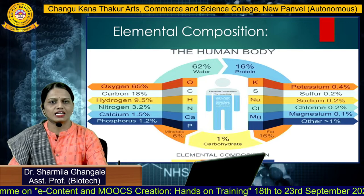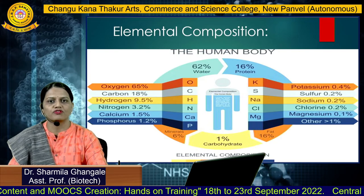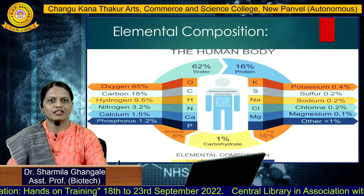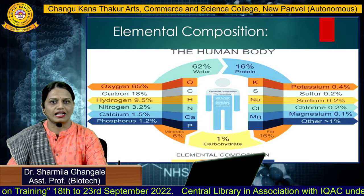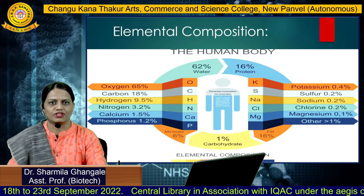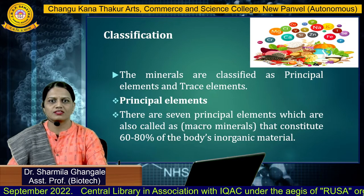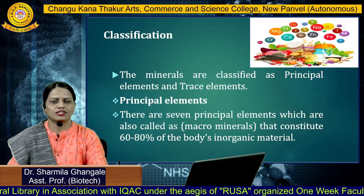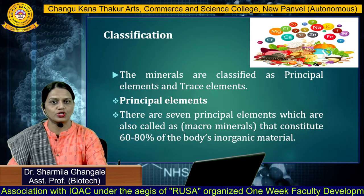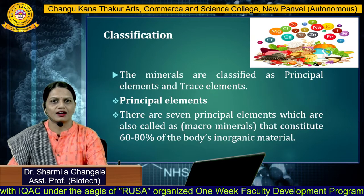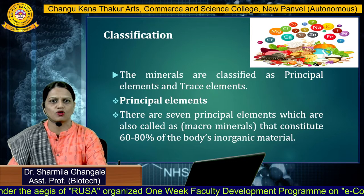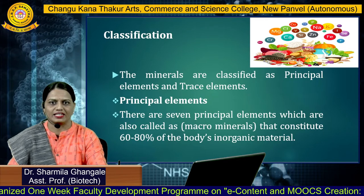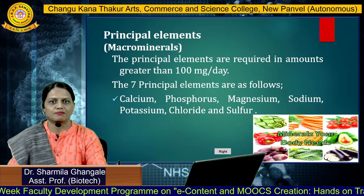These minerals are composed inside the human body to perform different functions, which we will study later. Before that, we are going to consider the classification. As far as the classification of minerals is concerned, the minerals are classified as principal elements and trace elements. Principal elements are 7, called macro minerals, and they constitute 60 to 80% of the body's organic and inorganic material.